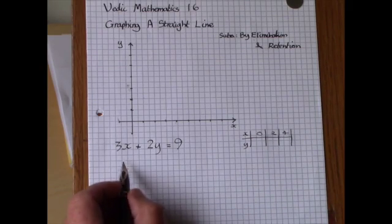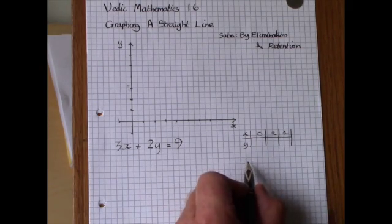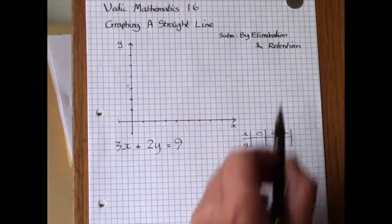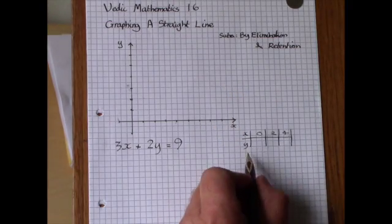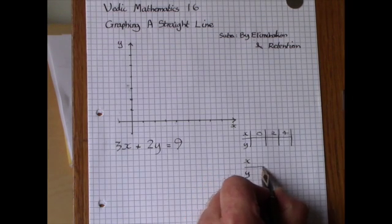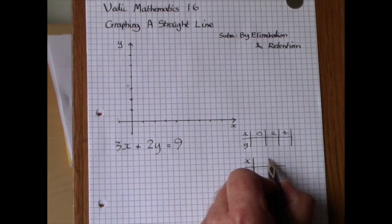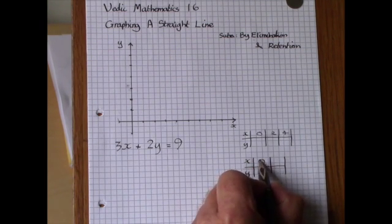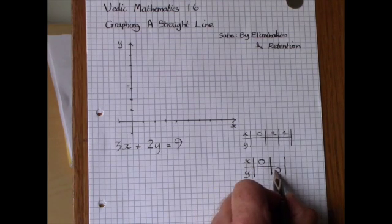Well the Radic approach is a little bit more simple and it uses the rule by elimination and retention. And what it does is effectively makes the table of values just two points are required for a line and the table of values has an x is 0 and a y is 0.